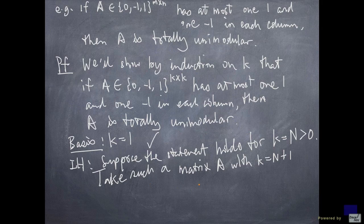Clearly, any square submatrix whose dimension is less than or equal to n by n is going to have determinant 0, minus 1, or 1 by induction hypothesis because every square submatrix will satisfy this property.